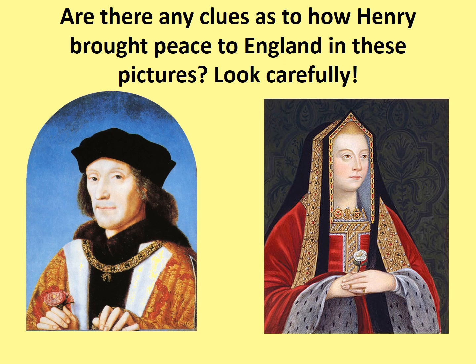So are there any clues as to how Henry brought peace to England in these pictures? Look carefully. Did you spot the roses? Here we can see that Henry Tudor is holding the Red Rose of Lancaster and Elizabeth of York is holding the White Rose of Yorkshire. That's right — Elizabeth of York was a Yorkist. By marrying her, Henry would unite the House of Tudor and the House of York into one new royal family, hopefully uniting the old Yorkists who might otherwise rise up against him and bringing peace to the kingdom.